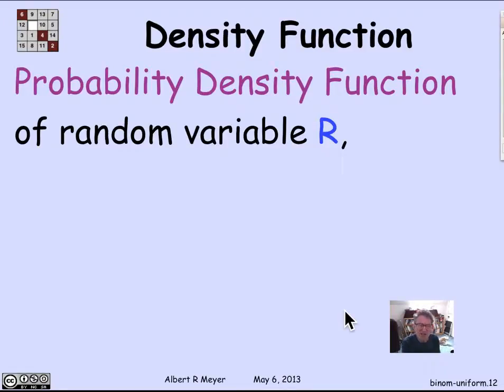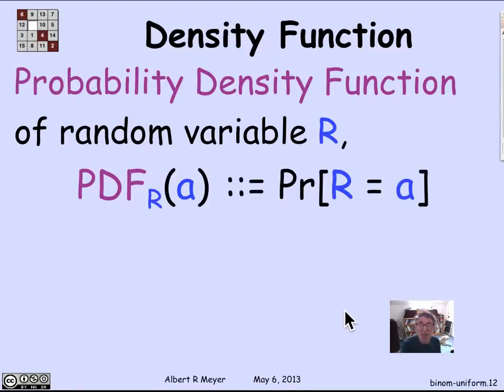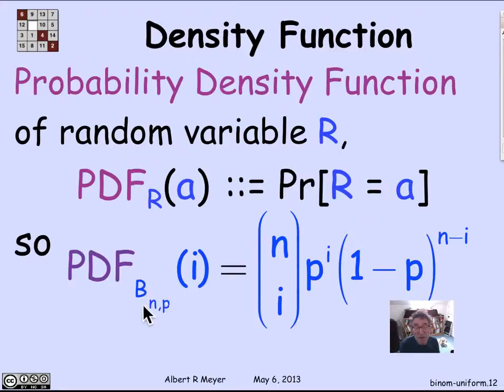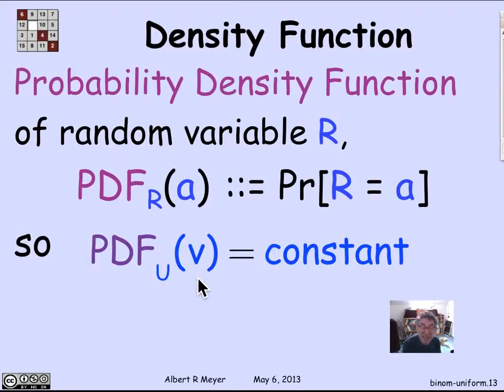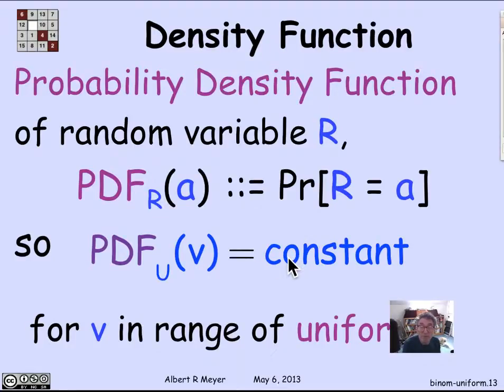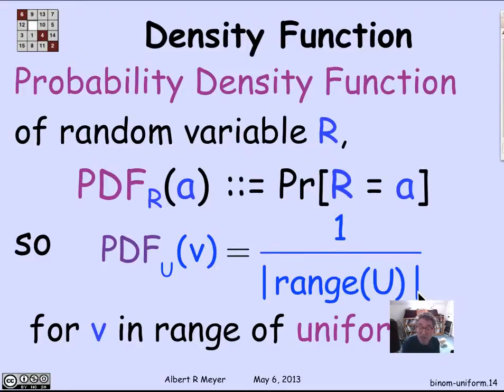The probability density function abstracts out some properties of random variables. Basically, it just tells you what's the probability that the random variable takes a given value for every possible value. So the probability density function, pdf of r, is a function on the real values. And it tells you for each a what's the probability that r is equal to a. So what we've just said is that the probability density function of the binomial random variable characterized by parameters n and p at i is n choose i, p to the i, 1 minus p to the n minus i. If I look at the probability density function for a uniform variable, then it's constant. The probability density function on any possible value v that the uniform variable can take is the same. So in fact, you can say exactly what it is. It's simply 1 over the size of the range of u if u is uniform.